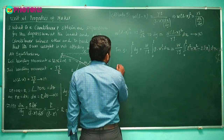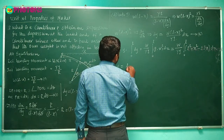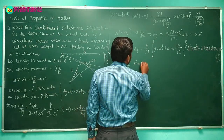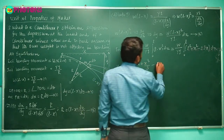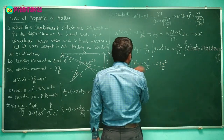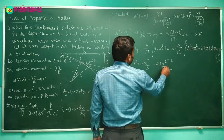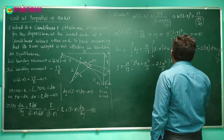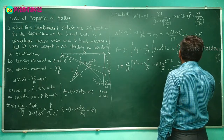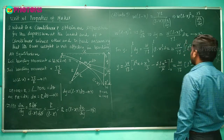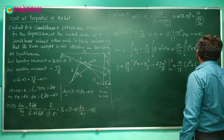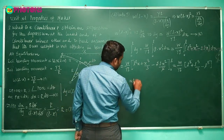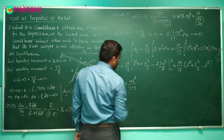Expanding (l − x)² = l² + x² − 2lx, integrating term by term gives: W/YI times [l²x + x³/3 − lx²] from 0 to L. Applying the limit, the terms simplify: l³ − l³/3 − l³ + l³ cancels appropriately, and the final result is y = WL³ / 3YI. This is the expression for the vertical depression of the cantilever.